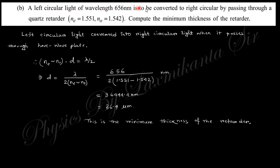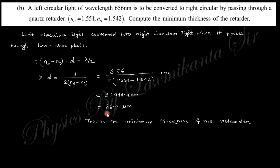The next question: left circularly polarized light of a given wavelength is to be converted into right circularly polarized light. Left circularly polarized light can be converted into right circularly polarized light using a half-wave plate. The required path difference gives a specific thickness formula, and from that you can calculate the minimum thickness needed.